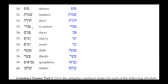Number thirty-one: Gibbor — for warrior. Gibbor has a Holem Vav, which is irreducible and doesn't change. The short vowel syllable also remains the same. So Gibbor is identical in both the absolute and the construct.